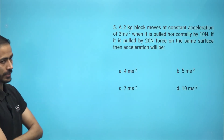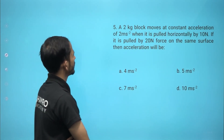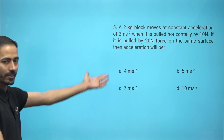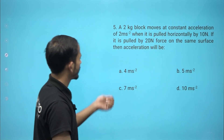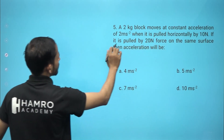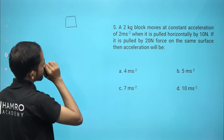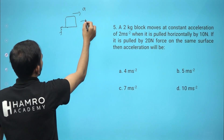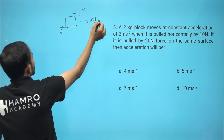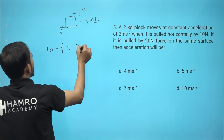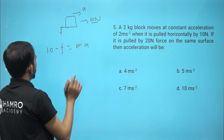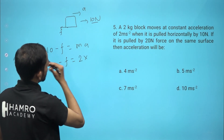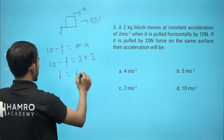Next problem: a 2 kg block moves with constant acceleration when pulled horizontally by 10 newton. Using Newton's second law: 10 minus f equals m times a, which is 2 kg times 2 m/s². So frictional force f equals 10 minus 4, which gives f equals 6 newton.